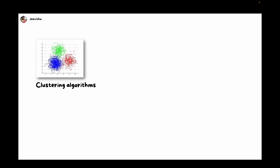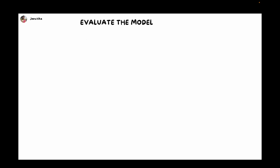What if you have data without a target? With such data, we use clustering algorithms. Different clustering algorithms include K-means, PCA, DBSCAN, and hierarchical clustering. When you take up different machine learning models, you train a model and test a model. Once you train and test, try with all possible models, and then evaluate the model.